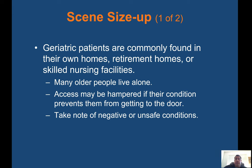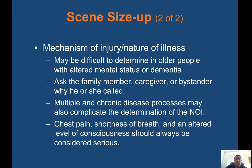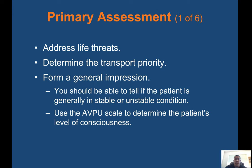Be a patient advocate — if the patient is struggling to care for themselves, it may be better for them to be in a care home. Nurses may also ask about the condition of the patient's home. Assessing an older person can be challenging because of communication issues, hearing and vision deficits, alterations in consciousness, complicated medical histories, and effects of medications. Scene size-up: geriatric patients are commonly found in their own homes, retirement homes, or skilled nursing facilities. Many older people live alone, and access may be hampered if they cannot get to the door. The mechanism of injury or nature of illness may be difficult to determine in patients with altered mental status or dementia — ask family members, caregivers, or bystanders. Always consider chest pain, shortness of breath, and altered level of consciousness. Primary assessment: address life threats, determine transport priority, and form a general impression of whether the patient is stable or unstable using the AVPU scale.